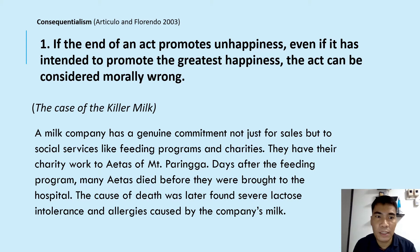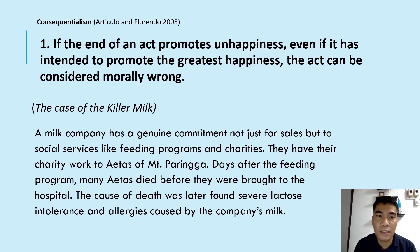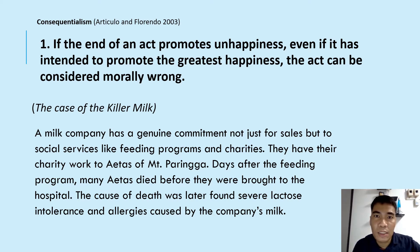The case of the killer milk: a milk company has a genuine commitment not just for sales, but to social services like feeding programs and charities. They have their charity work to ATAS of Mount Paringa. Days after the feeding program, many ATAS died before they were brought to the hospital. The cause of death was later found to be severe lactose intolerance and allergies caused by the company's milk. In this case, the act intended to promote the happiness of many people, but its consequence resulted in the suffering and death of many. Since the act failed to observe the principle of consequentialism, regardless of the nobility of its purpose, the act is unethical.